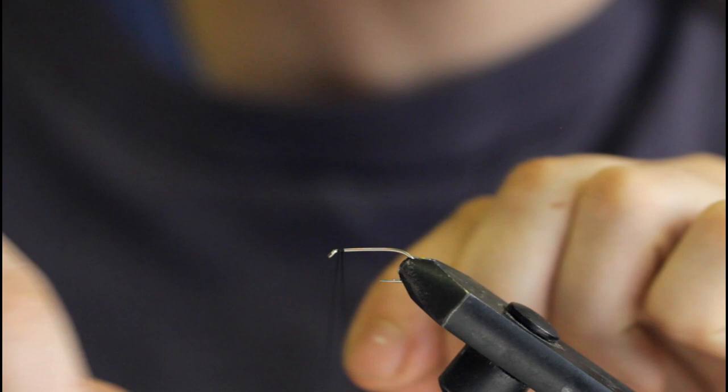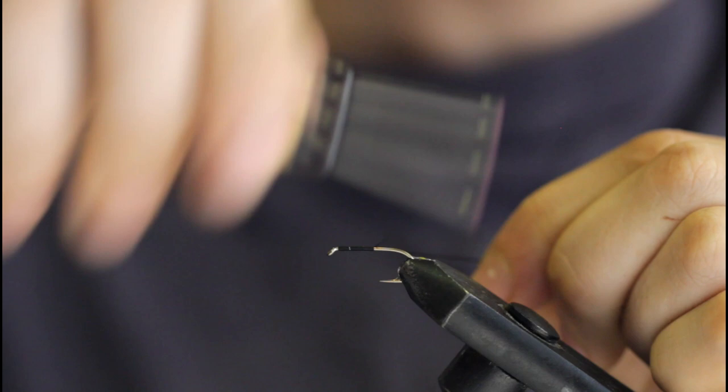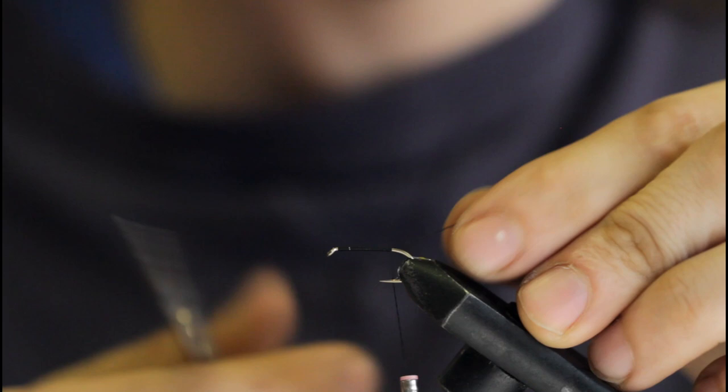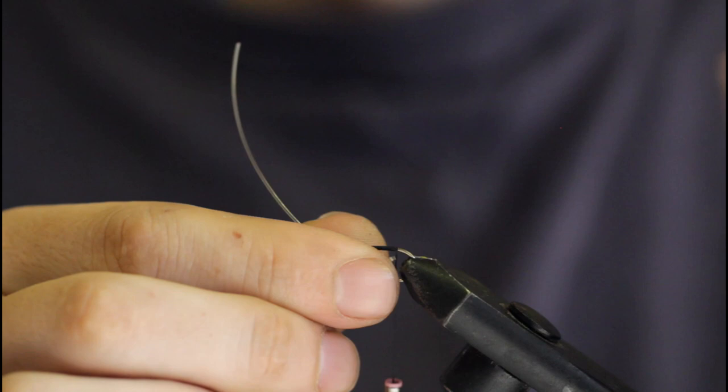And some UTC thread 210 in black. Start at the hook eye and build up a nice base down to about the barb of the hook. Snip off the tag.